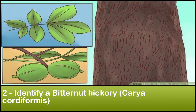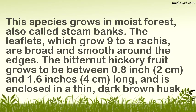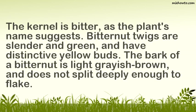Step 2: Identify a Bitternut Hickory (Carya cordiformis). This species grows in moist forests, also called stream banks. The leaflets, which grow 9 to a rachis, are broad and smooth around the edges. The bitternut hickory fruit grows to be between 0.8 inch and 1.6 inches long, and is enclosed in a thin, dark brown husk. The kernel is bitter, as the plant's name suggests. Bitternut twigs are slender and green, and have distinctive yellow buds. The bark of a bitternut is light grayish-brown and does not split deeply enough to flake.